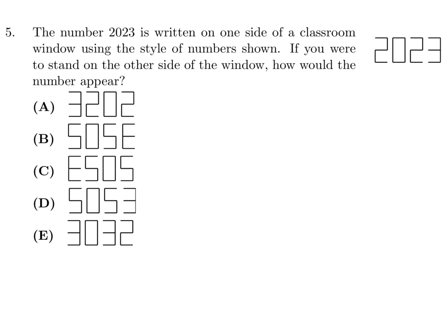The number 2023 is written on one side of a classroom window using the style of number shown. If you were to stand on the other side of the window, how would the number appear? What I just did is I took this and I wrote it on a piece of paper kind of firmly, and then I just flipped the page over and looked at it. When I flip the page and looked at it, it looked like this guy right here, C is the answer to number 5.